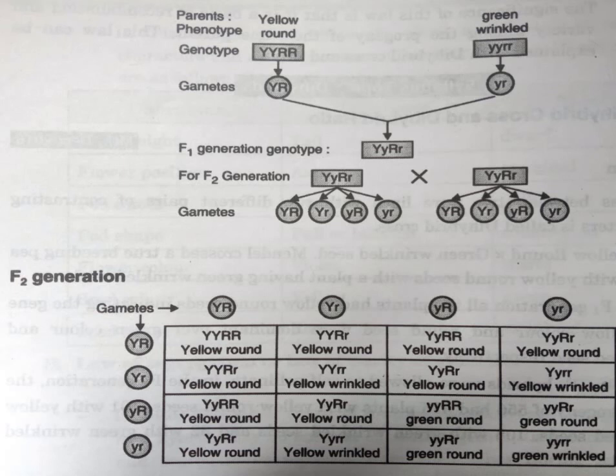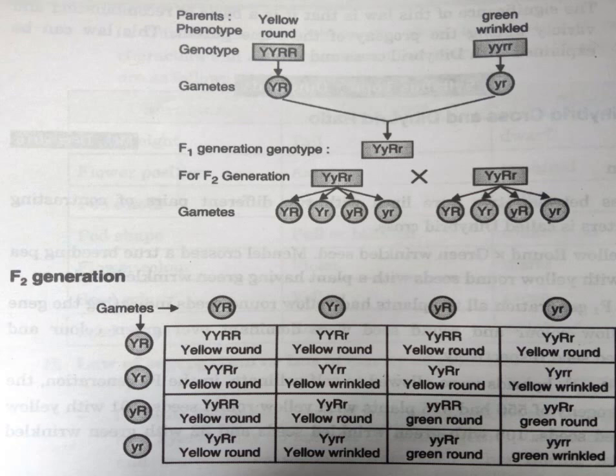In the F2 generation, the total plants found would be in the ratio of 9:3:3:1. You can see in the table: there are 9 yellow round, 3 green round, 3 yellow wrinkled, and 1 green wrinkled. So this formation of plants is in accordance with the dihybrid ratio 9:3:3:1.